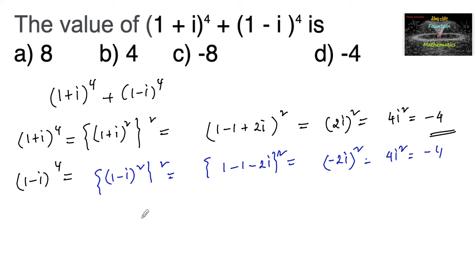We can add the sum: (1 + i) to the power of 4 plus (1 - i) to the power of 4 is equal to minus 4 plus minus 4, which is equal to minus 4 minus 4, which is minus 8. So minus 8 is the answer, which is option c.